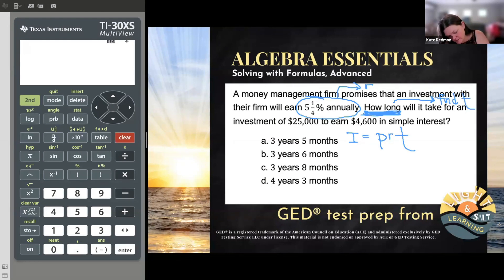Will it take for an investment of $25,000? We invested $25,000. That's how much we started with. That's called the principal. $4,600 in interest. The dollar amount of the interest is the I. The percent is the R, but the dollar amount is the I. So this is the interest.